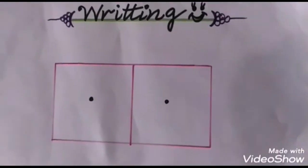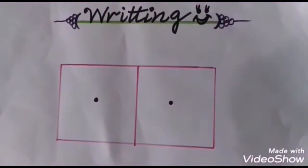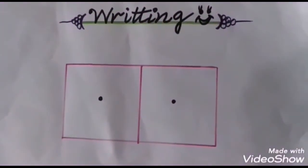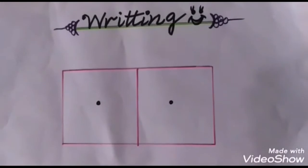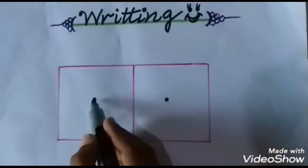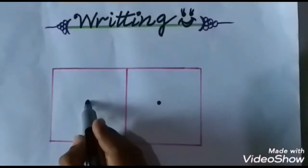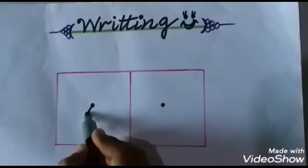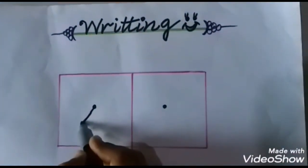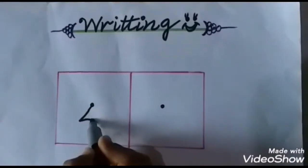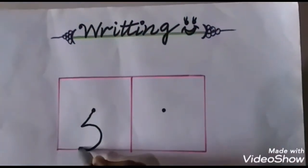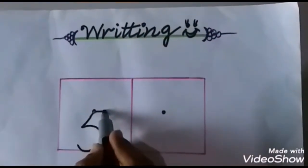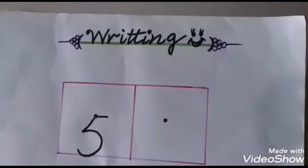Now it's time to do the writing practice of digit 5. Now teacher will guide you how we write the digit 5. We start from this point and make a small slant line. And then make a beautiful small belly. And make a slip line. This is 5.